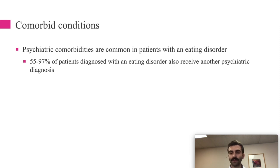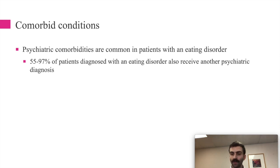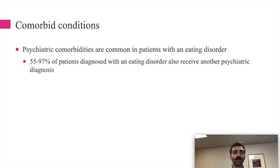Anxiety disorders are also common in people with eating disorders, as are substance use disorders. This isn't just stimulant use to suppress appetite — it can be other substances too. Because people with eating disorders often have fewer neurotransmitters or altered neurotransmitter function, their mood can be down, and substances become a way to change how they feel.